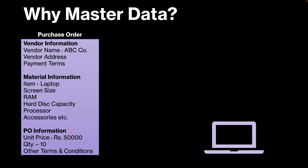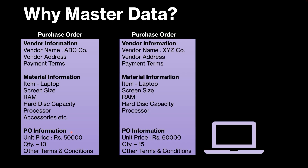Now let's imagine that another plant of your organization requires the same laptops. Again, they have to create a purchase order containing all that information. Let's say this time the plant is purchasing from a different vendor — so the vendor address will be different, payment terms might be different. The material is the same: same laptop, same screen size, RAM, hard disk capacity, processor. But this time, the person forgot to enter the accessories in this purchase order. While entering the specifications of the laptop manually, he forgot to mention that accessories are also required. And he placed the order with these PO informations.